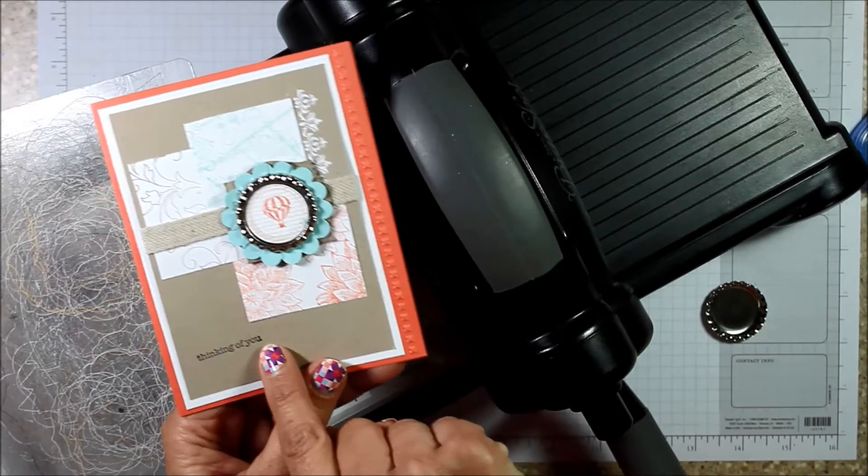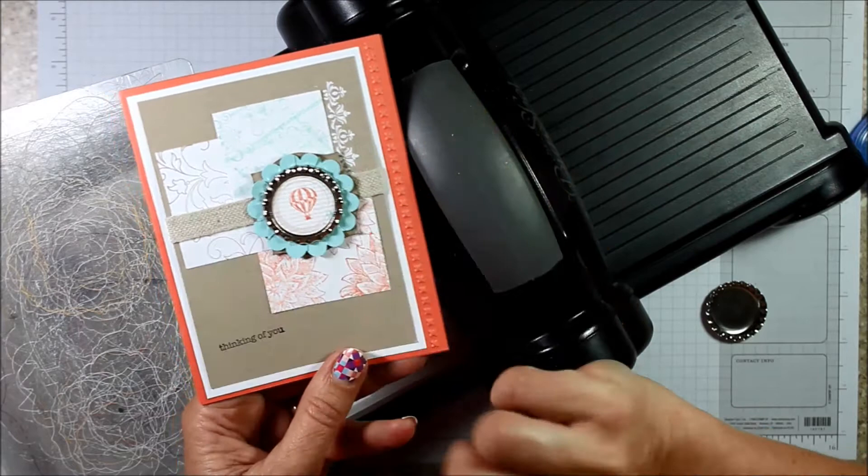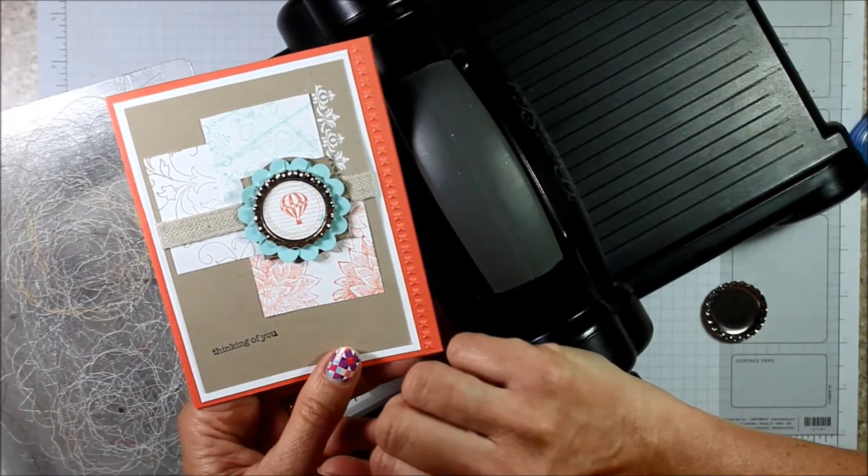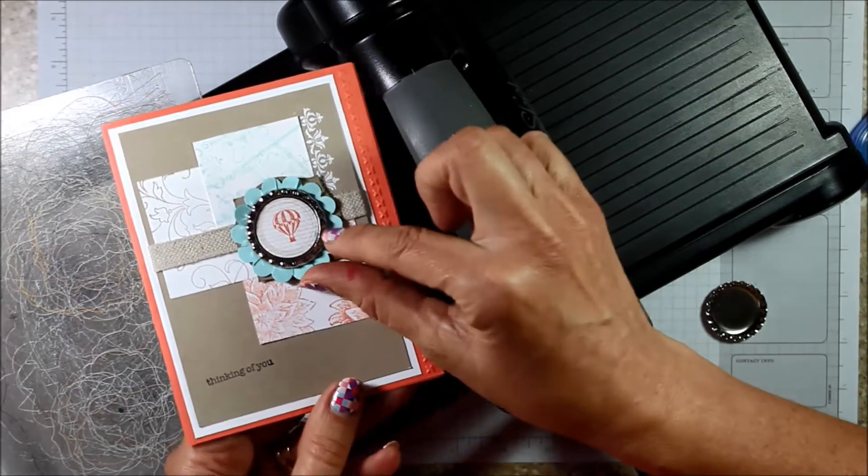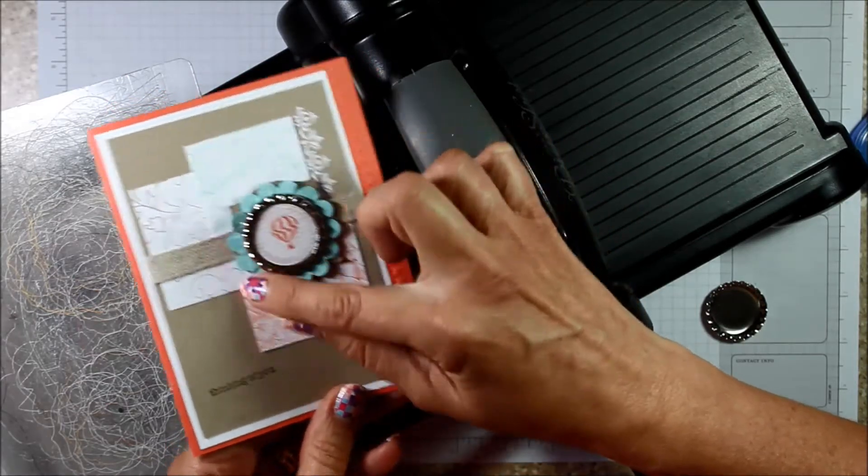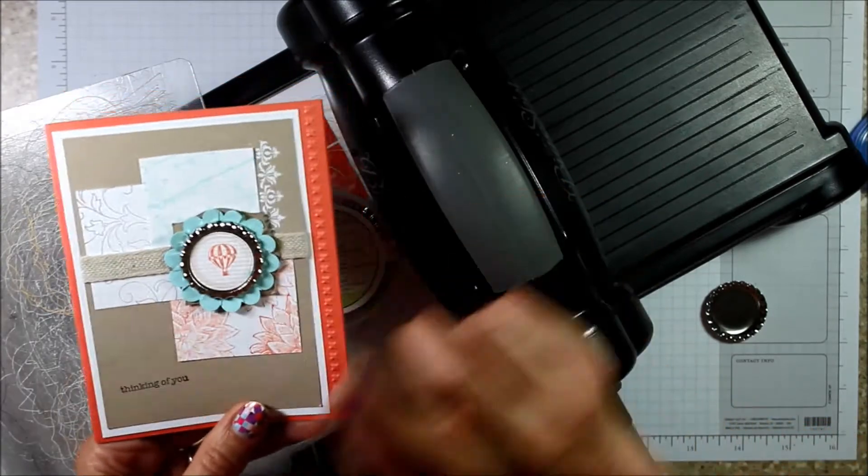And then Teeny Tiny Wishes is a great greeting set that you can just use on almost any card. The focal point is what we're going to really focus on today. I'm going to show you how to take the soda pop tops and smash them and how to make this really cute little scallop daisy out of the scallop circle punch. So let's get started.